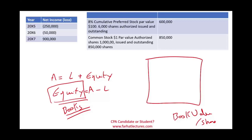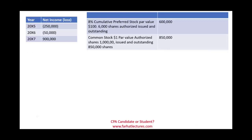In order to compute the book value per share, we are given 8% cumulative preferred stock with a par value of $100, and 6,000 shares outstanding. These shares pay $8 per share, so 6,000 shares pay $48,000 per year to preferred shareholders. Since the preferred is cumulative, if we don't pay shareholders each year, we still owe them that money in the future — although it is not recorded as a liability. That gives us $600,000 of preferred stock.